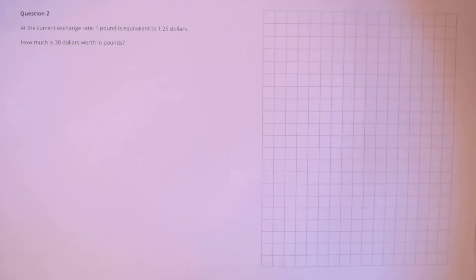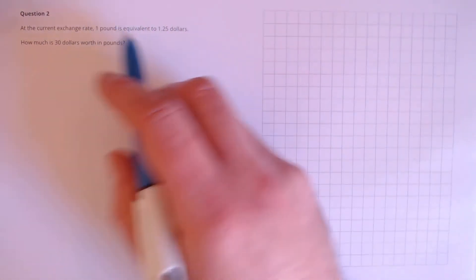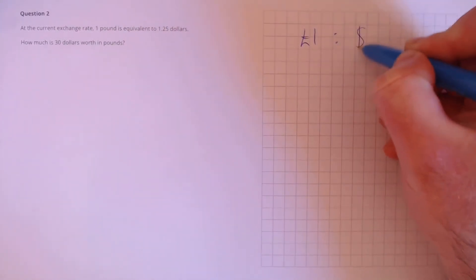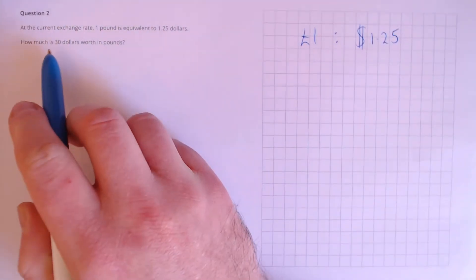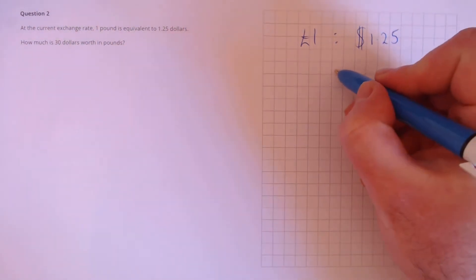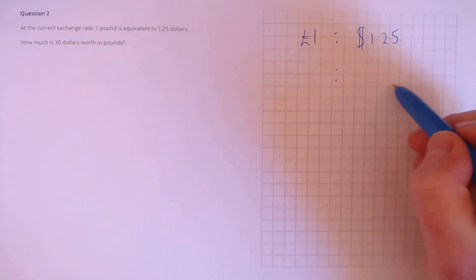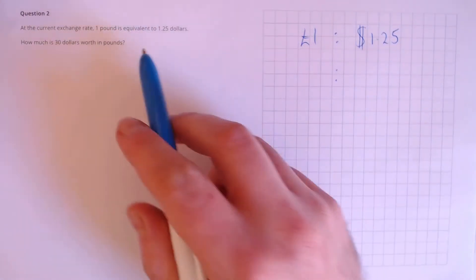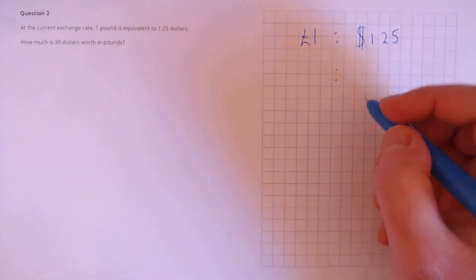Question 2. At the current exchange rate, £1 is equivalent to $1.25. How much is $30 worth in pounds? We've got the ratio here, £1 is equivalent to $1.25. If we want $30 in pounds, we've already been given the dollars and we need to calculate pounds, so let's reverse this exchange rate.